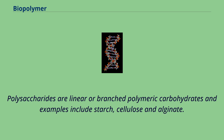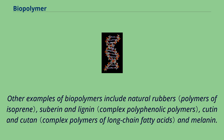Polysaccharides are linear or branched polymeric carbohydrates, and examples include starch, cellulose, and alginate. Other examples of biopolymers include natural rubbers, suberin and lignin, cutin, and melanin.